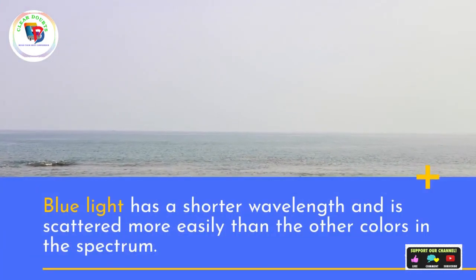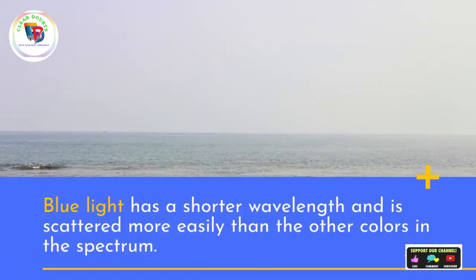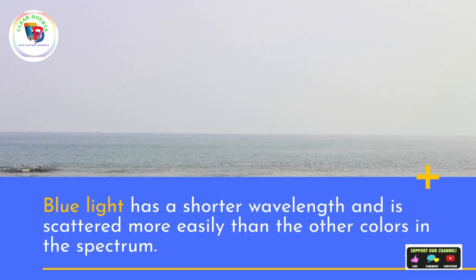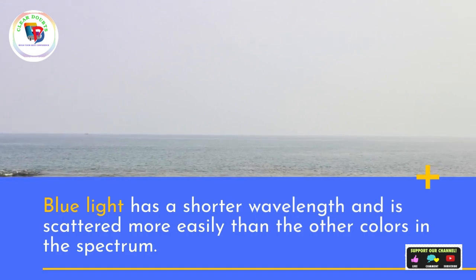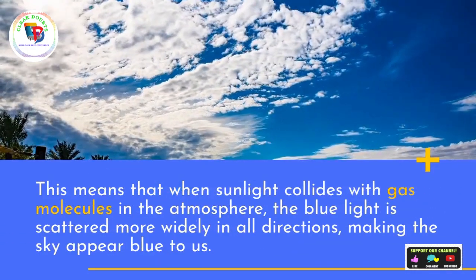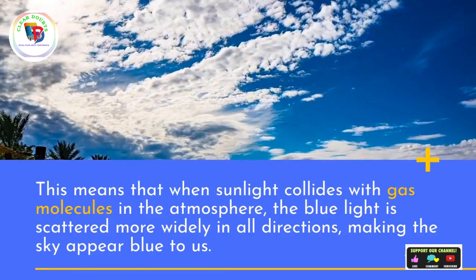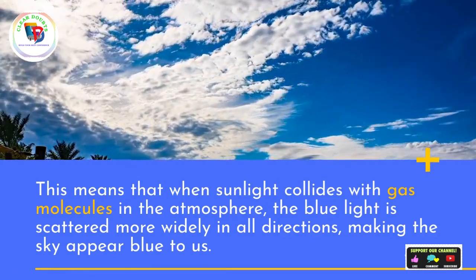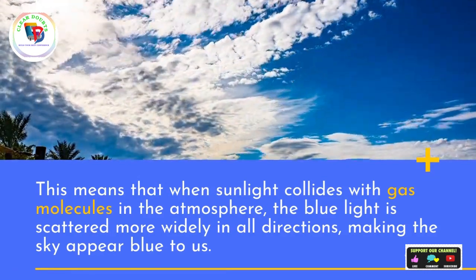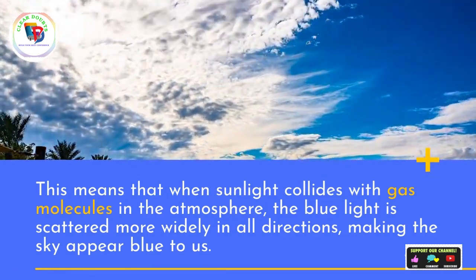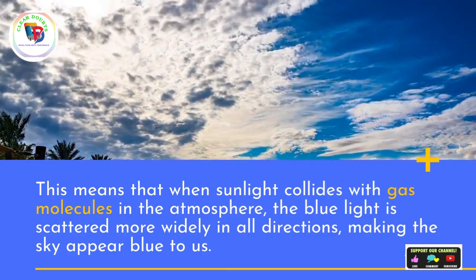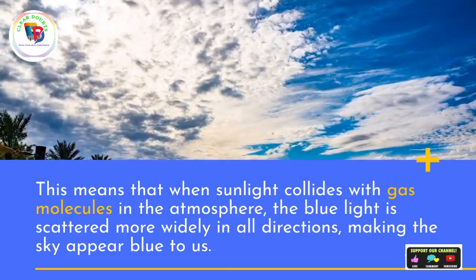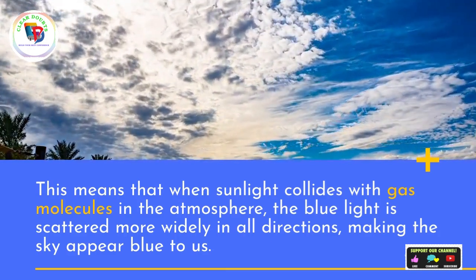Blue light has a shorter wavelength and is scattered more easily than the other colors in the spectrum. This means that when sunlight collides with gas molecules in the atmosphere, the blue light is scattered more widely in all directions, making the sky appear blue to us.